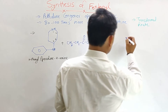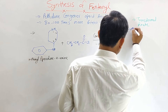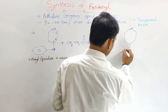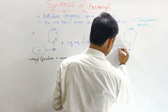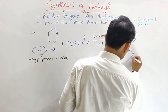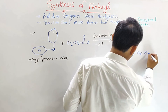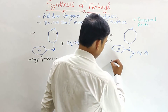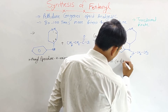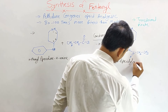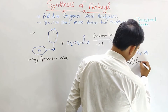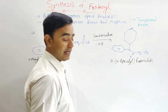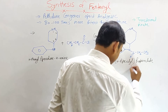The next intermediate formed has the nitrogen with the phenyl group linked to it, and a CO–CH₂–CH₃ propionyl chain. This new intermediate is called N-4-piperidyl propionamide.